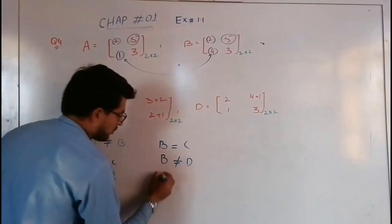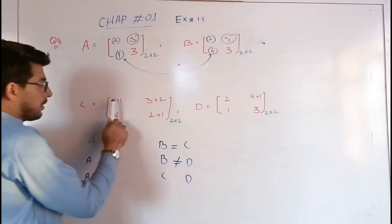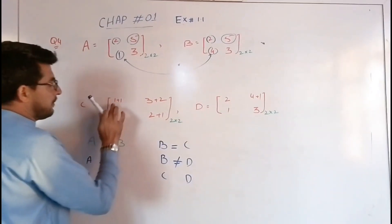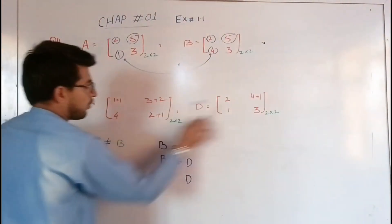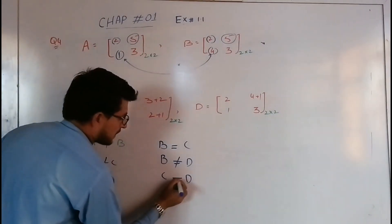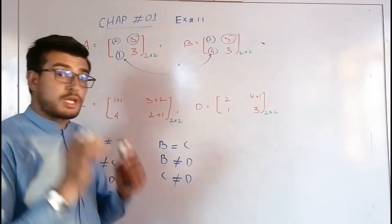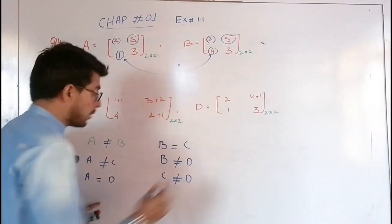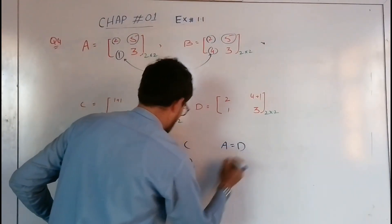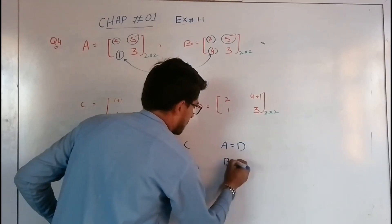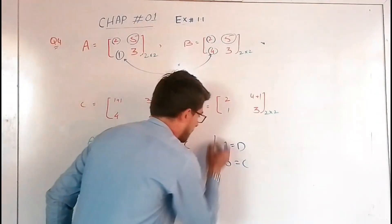Then for C and D: the corresponding elements are 2, 2, 5, 5, 4, 1. Since 4 and 1 are not equal, C and D are not equal. So A and D are equal, and B and C are equal, giving us our final answer.